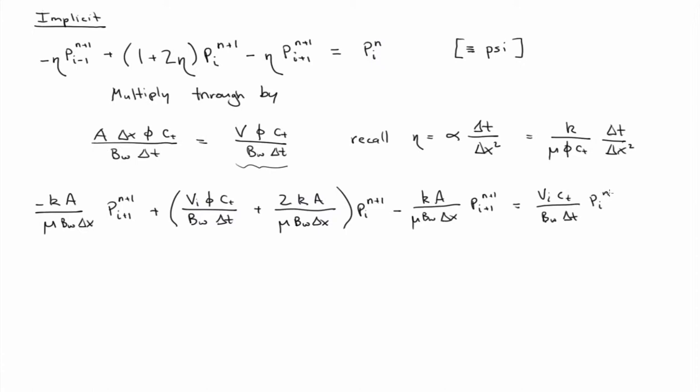All right. Can anyone tell me what the units of that equation is? So k is permeability. What does it have units of? Link squared. Is it water per day? Yeah. There's volume per day.